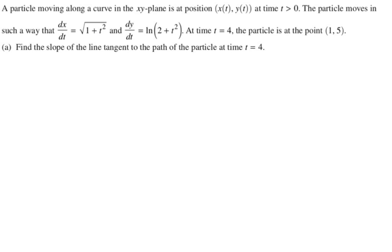Particle moving along a curve in the x-y plane is at the position x of t, y of t, at t greater than zero. The particle moves in such a way that dx dt is the square root of 1 plus t squared, and dy dt is the natural log of 2 plus t squared. So already I'm grabbing my calculator and I'm defining those functions so that I can use them.